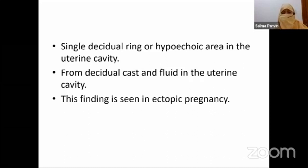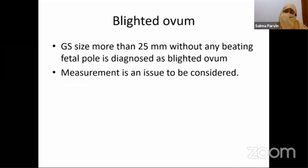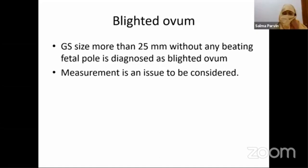This finding — the pseudogestational sac — is seen in ectopic pregnancy. It is formed from decidual cast and fluid in the uterine cavity and is what we look for to identify ectopic pregnancy. At one end there is a gestational sac with appearance of a fetal pole, and at the other end the gestation may end with a blighted ovum. The blighted ovum is diagnosed when the gestational sac is more than 25 mm in size without any beating fetal pole.